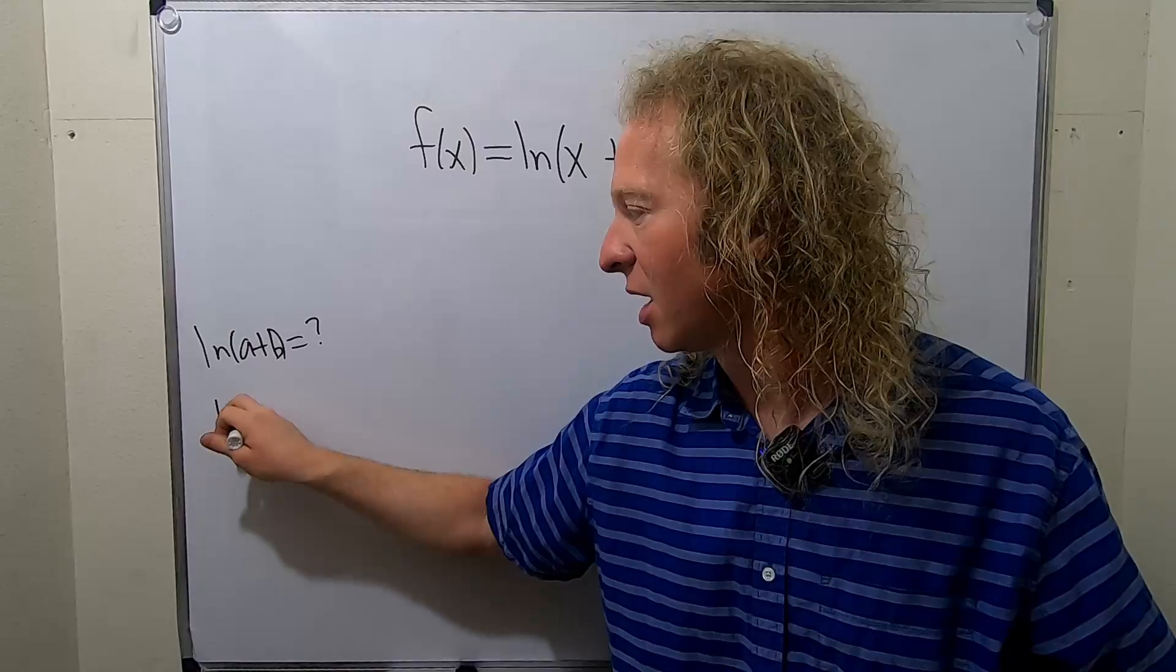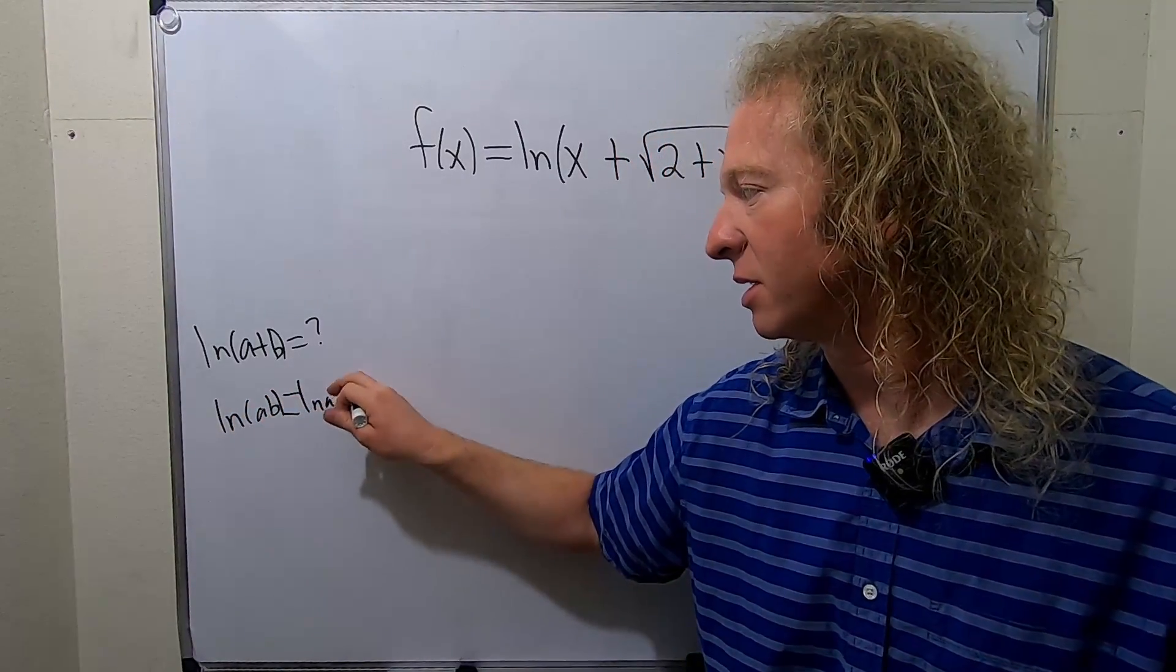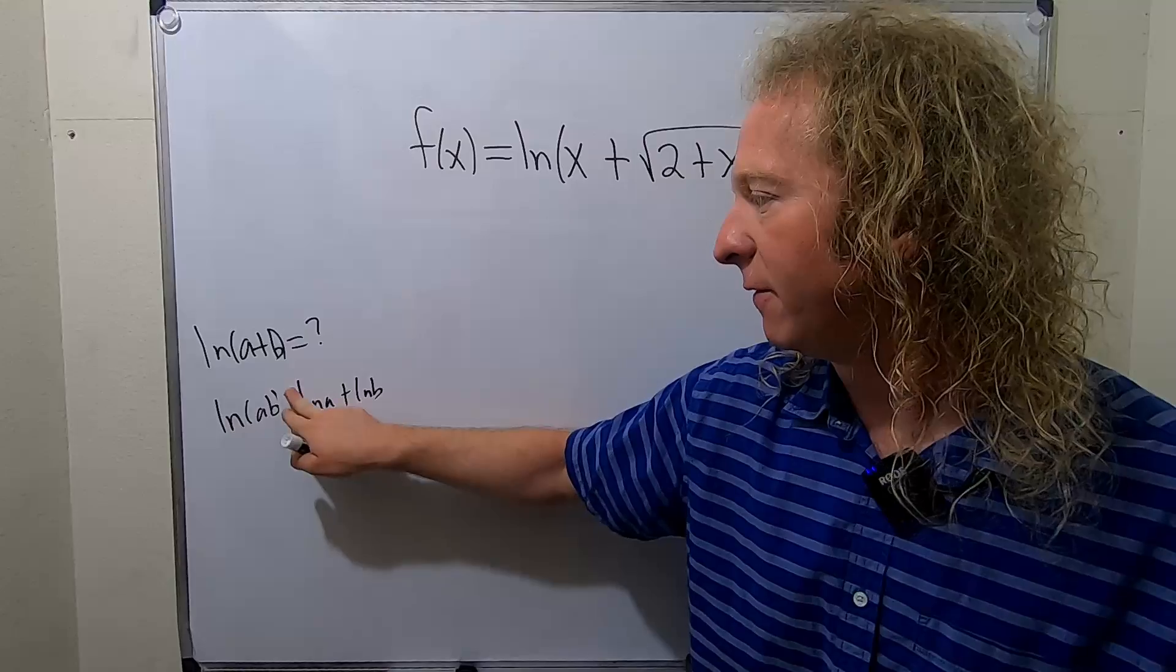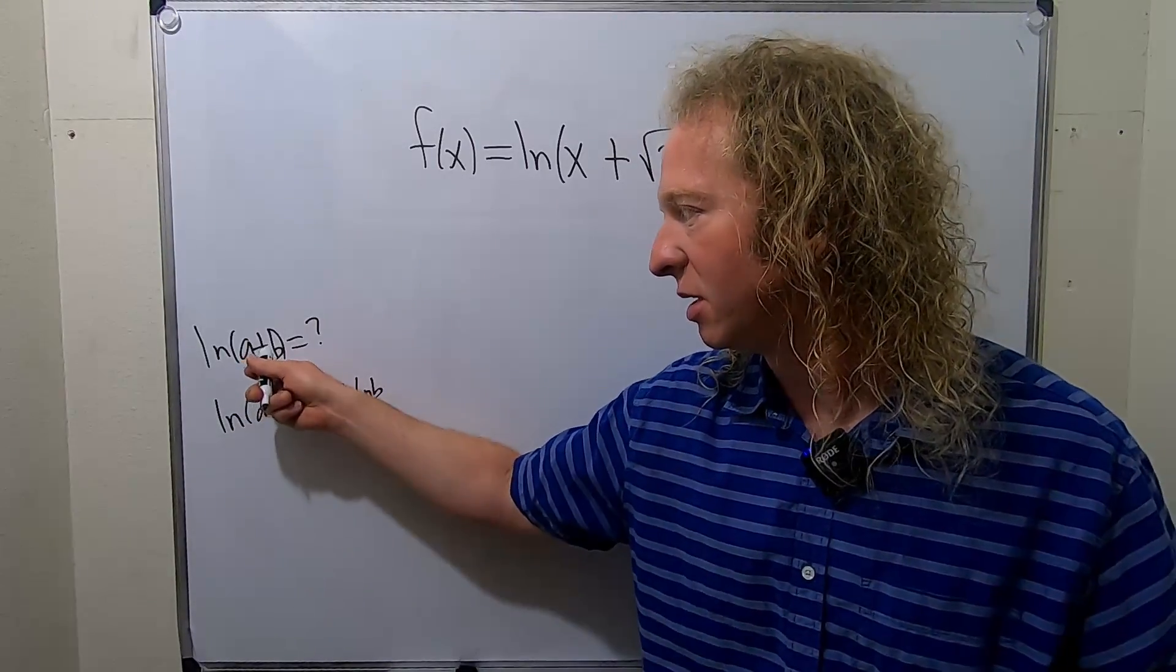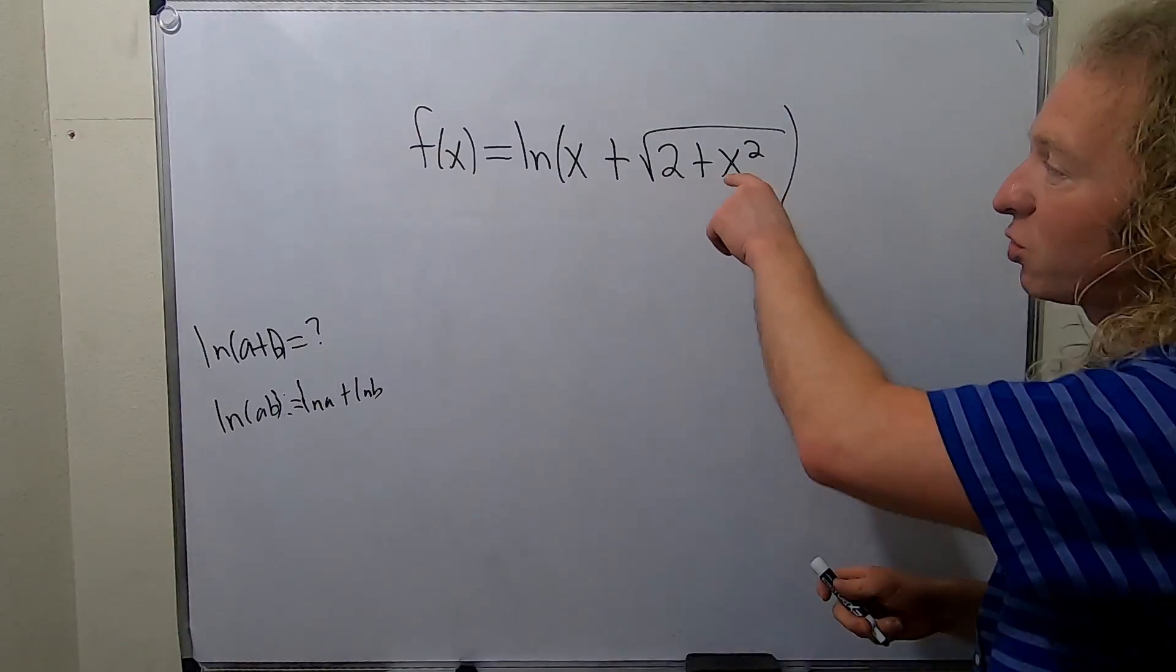It's only when it's something like ln a times b, then that would be ln a plus ln b. But if you have a plus here, like we do here, you can't really do anything. However, there is a square root here.